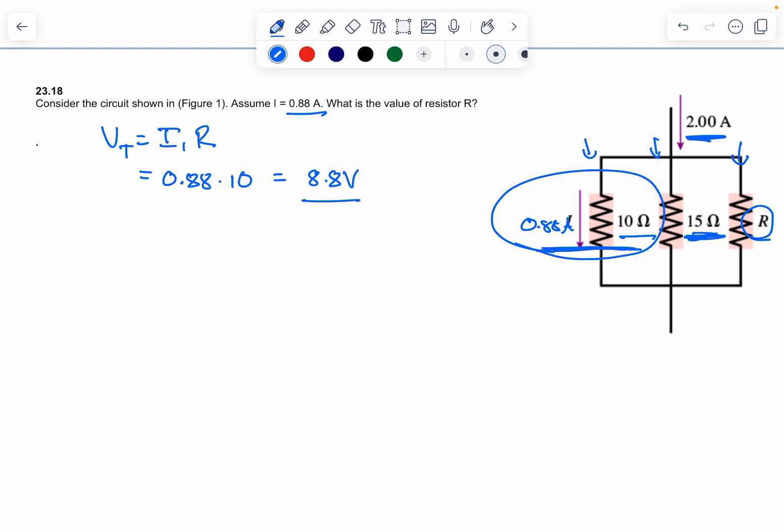So for number two, I can do the same thing. I know the voltage there. I know the voltage equals IR. I'm going to solve for I now. My voltage is 8.8 equals I, because I know the ohmage there is 15, and I can then solve for I2.